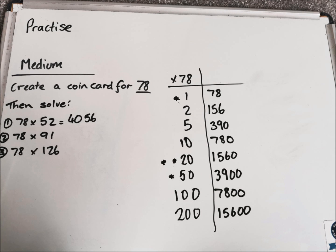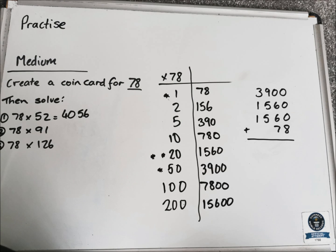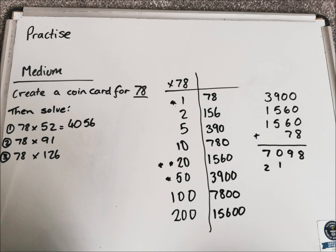The second problem was 78 times 91. This time I'm going to use 50, the 20 twice, and 1. So my addition sum at the side is 3,900, add 1,560, add 1,560 again, and then 78. Taking my time to add those up, we should have got 7,098 as the answer for that problem.